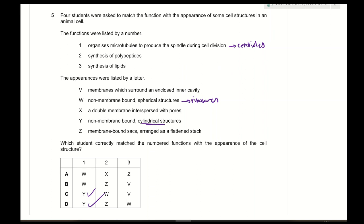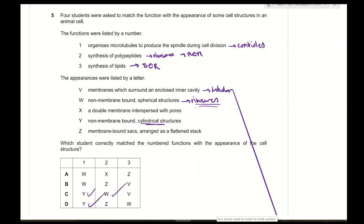For function 2 — synthesis of polypeptides — polypeptides are synthesized in the rough endoplasmic reticulum containing ribosomes. W represents ribosomes, so function 2 corresponds to W. For function 3 — synthesis of lipids — lipids and steroids like cholesterol are synthesized in the smooth endoplasmic reticulum. Looking at option V (membranes surrounding an enclosed inner cavity — a tubular structure), this represents the smooth ER. Therefore function 3 corresponds to V and the answer is C.